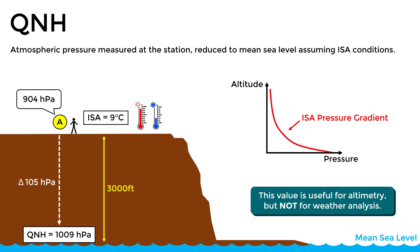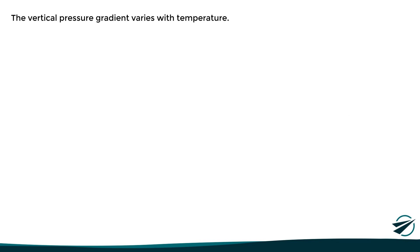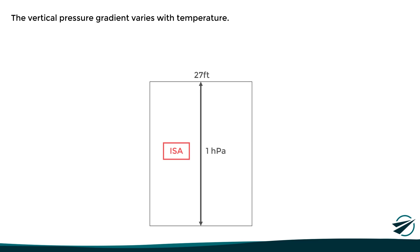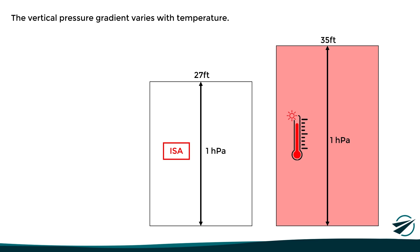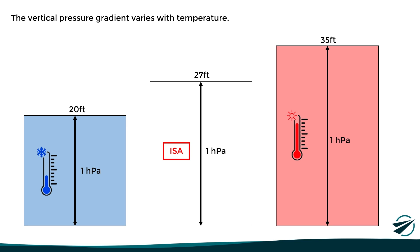The QNH is very useful for altimetry, since barometric altimeters are calibrated and designed to use standard conditions as reference. However, if what we want is to analyze horizontal pressure variations for weather observations and forecasts, it is necessary to take into account the effect of the actual temperature, which means that the QNH is not useful anymore. As we said in the previous video, the rate at which the pressure changes with altitude varies with air temperature. At sea level under standard conditions, the pressure changes by 1 hectopascal for every 27 feet. If the temperature increases, the pressure will reduce more slowly with altitude, resulting in a lower vertical pressure gradient. While if the temperature decreases, the pressure will reduce more rapidly, giving a higher vertical pressure gradient.